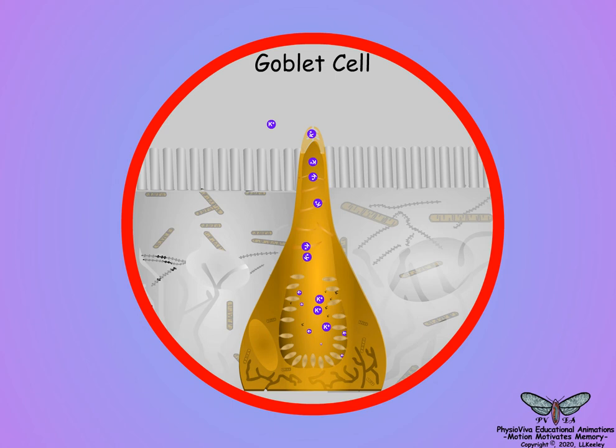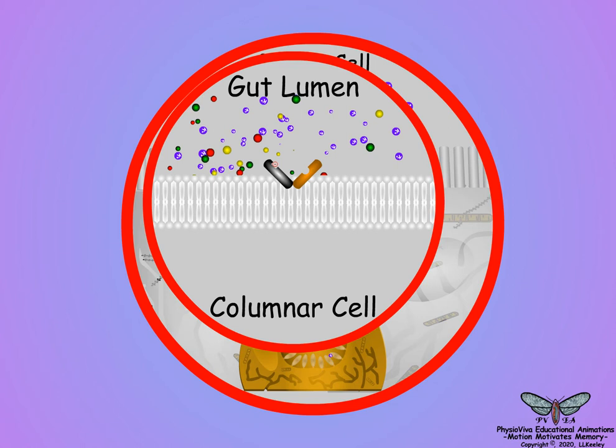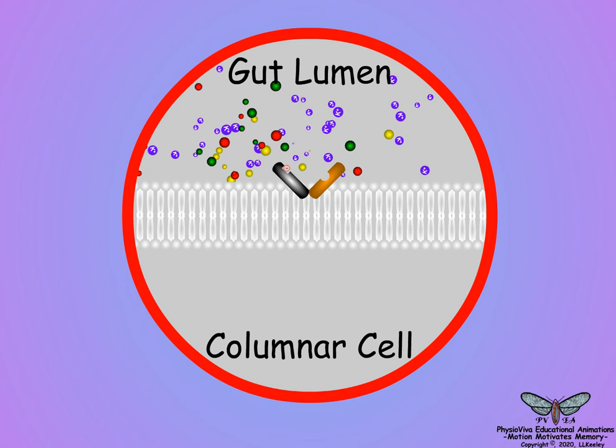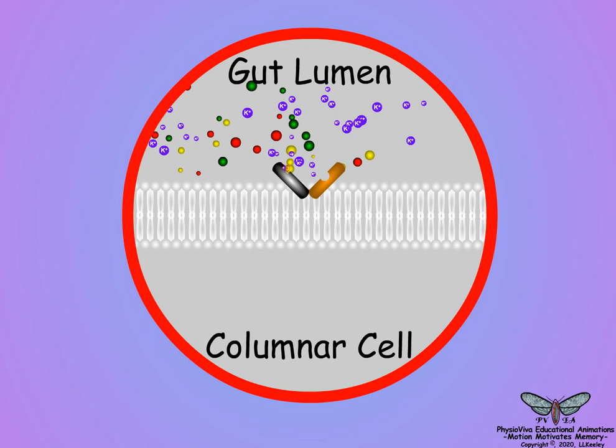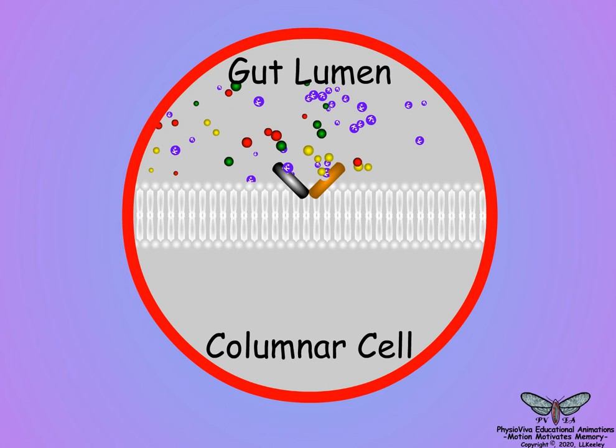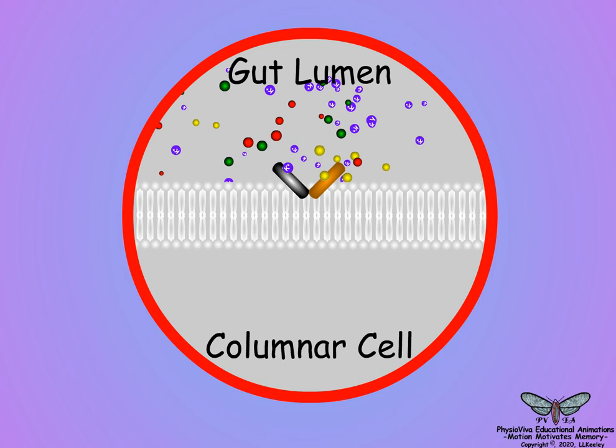Membrane-bound symporter proteins in the apical membrane of columnar cell microvilli use the electrochemical gradient for the potassium ions in the midgut lumen to power the absorption of nutrient-derived free amino acids. Negatively charged binding sites of the symporter protein bind the positive potassium ions, and an amino acid binding site binds a free amino acid, represented here by the red, yellow, or green spheres.